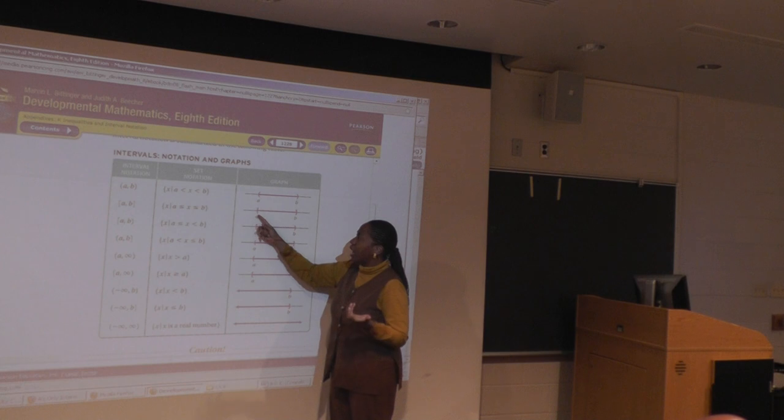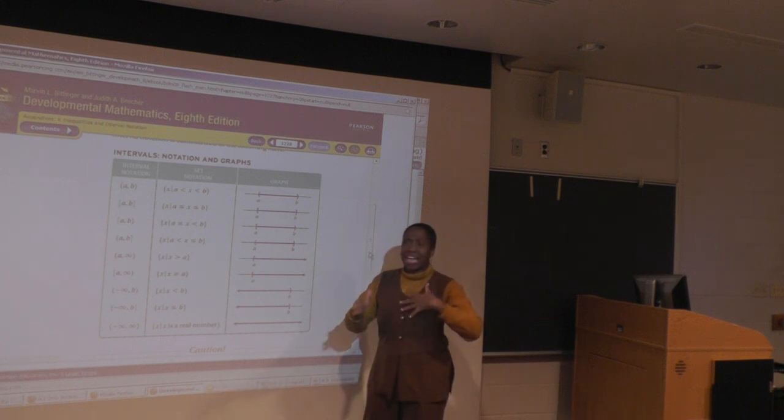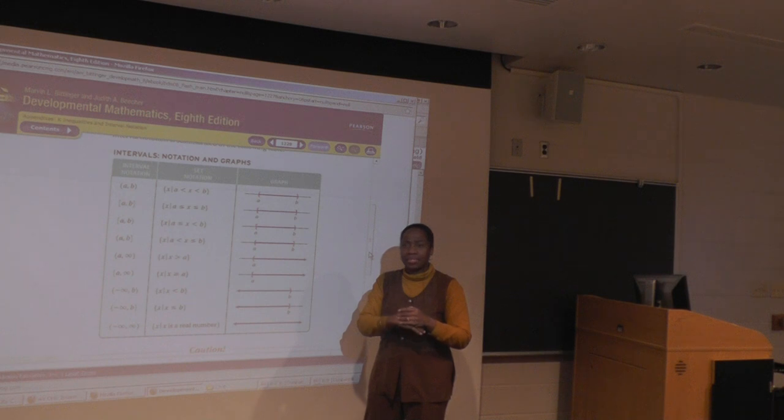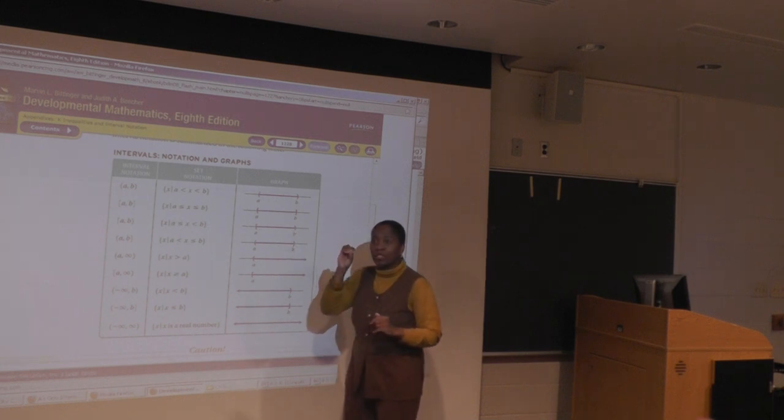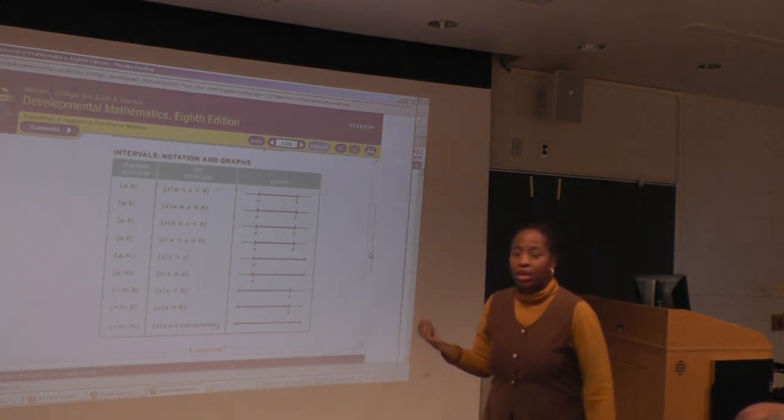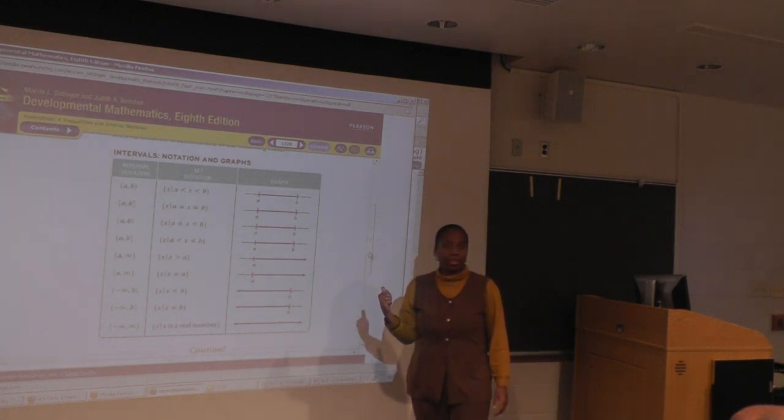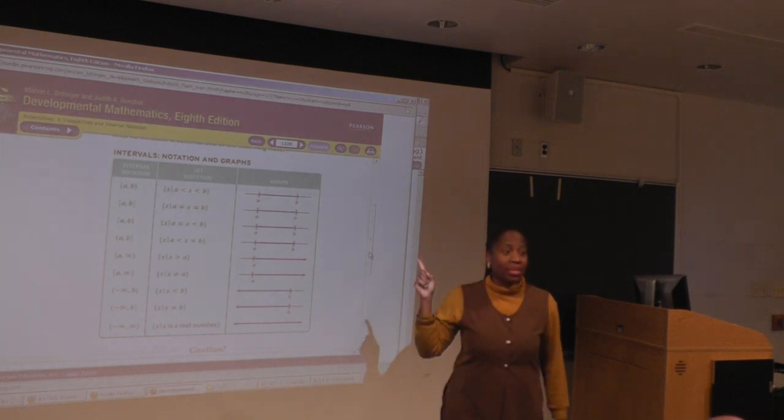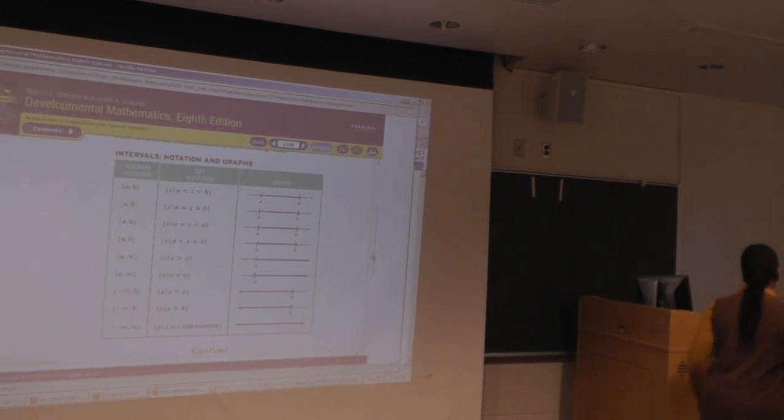it's either going to be a bracket or a closed circle, and it seems like he's using both in the same book, and I forget what he uses on the exam, but you'll see it. And then if it's not included, it'll be a parentheses or an open circle. They all mean the same thing. And I think that when they were doing this, they just forgot that it was inconsistent. Are there any questions? It's in your book on page 1228. Write this in on page 1228, and let's move on.